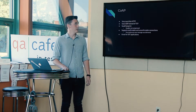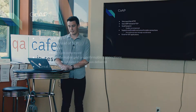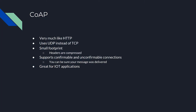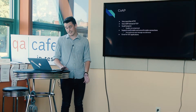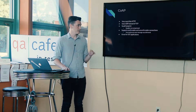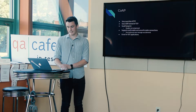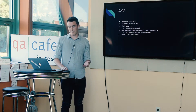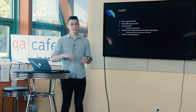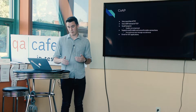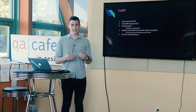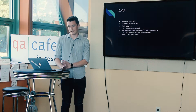CoAP is a bit like HTTP except it uses UDP instead of TCP, and has a really small footprint. One of the main ideas for creating CoAP was to make a really lightweight, simple protocol for IoT devices. All the headers are compressed so you don't have to spell everything out. There's also the idea of confirmable and unconfirmable connections — you can send a message and not care if it comes back, which is typical UDP behavior, or you can use confirmable messages to verify delivery after some timeout.